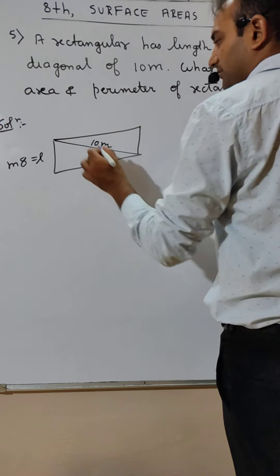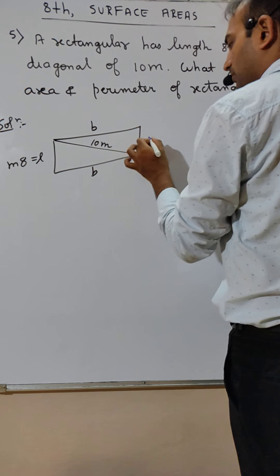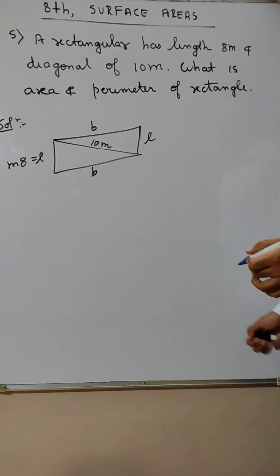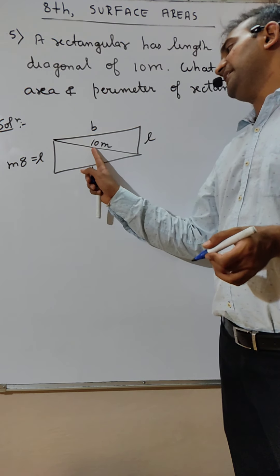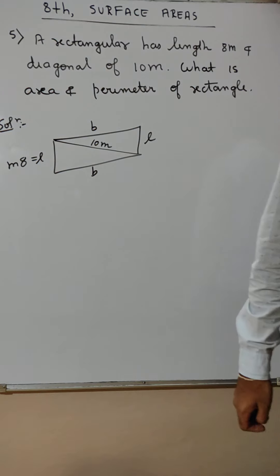What is area and perimeter? So do you know breath? Breath we don't know, length you know. Bachcha tell me, length you know, breath you don't know, diagonal you know. Can you tell me what to do? How to solve this?